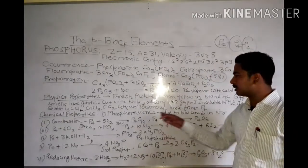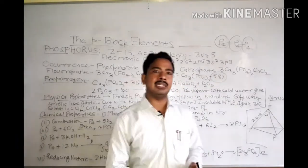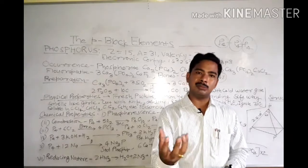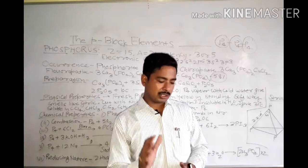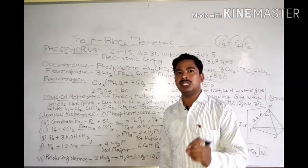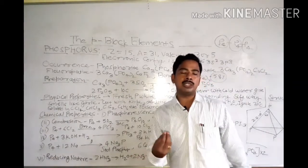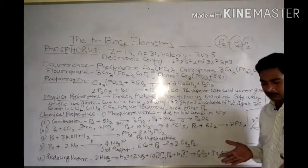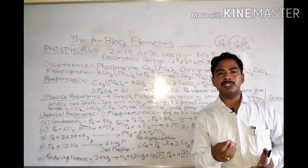Chemical properties: first is phosphorescence. Phosphorescence means that when it is dark, phosphorus will glow. The phosphorescence property is because of slow combustion — it is very gradual combustion at low speed. So phosphorescence is the property because of which phosphorus glows in the dark.